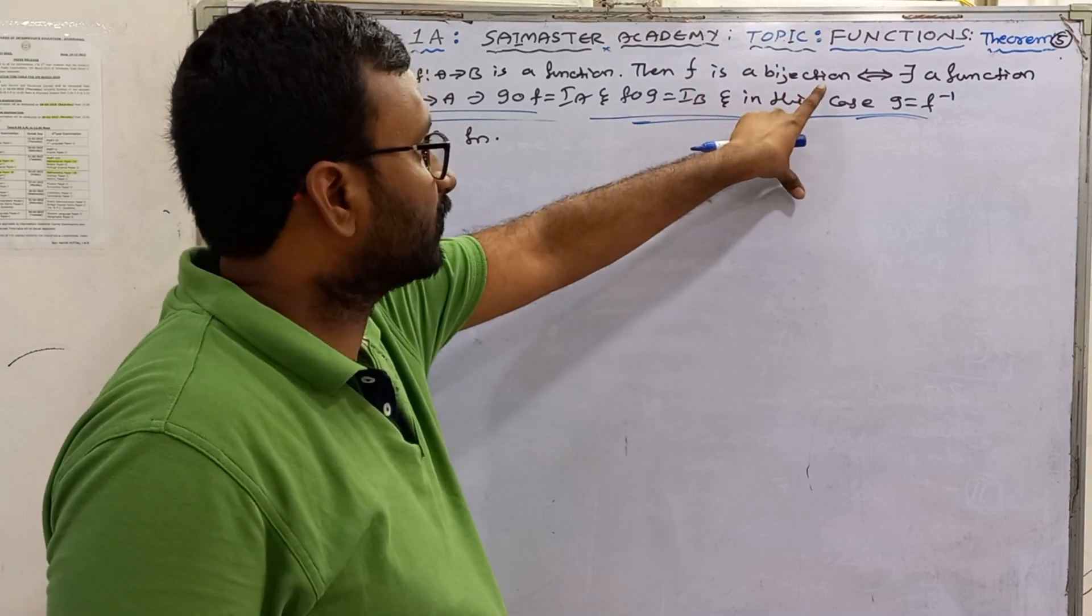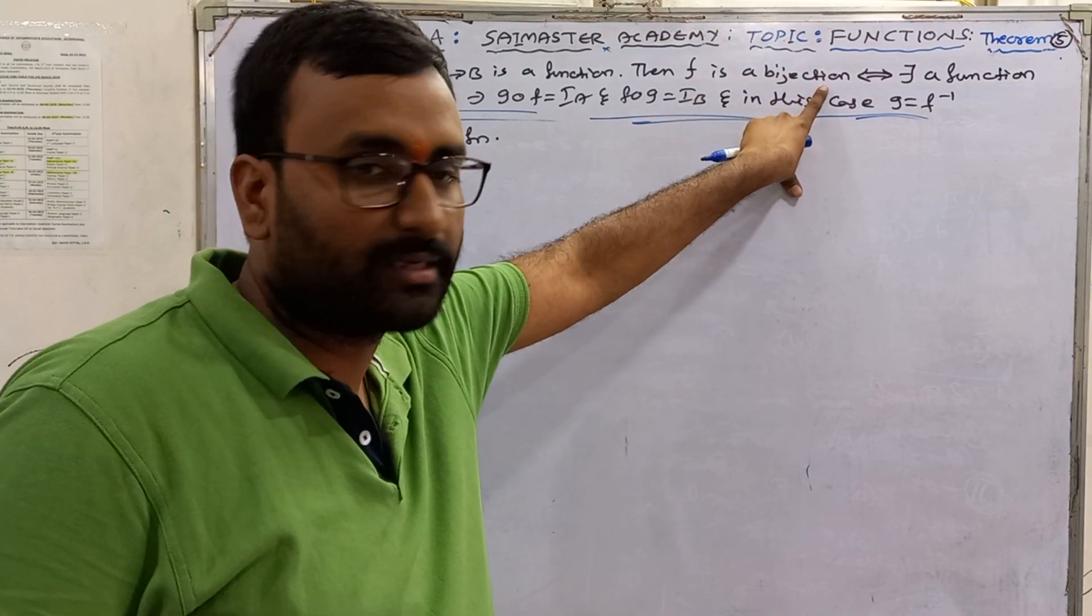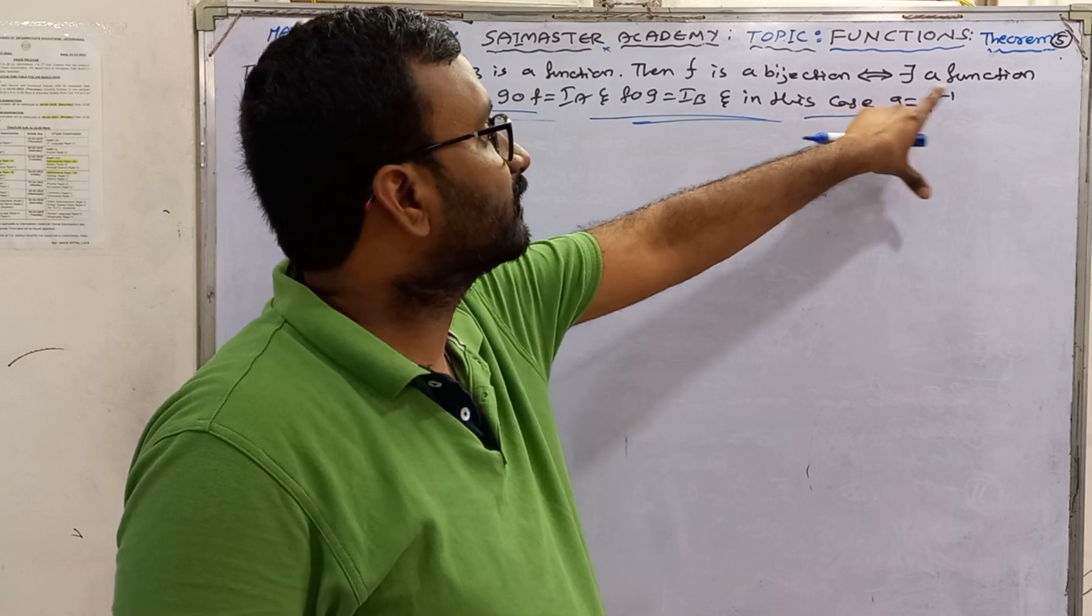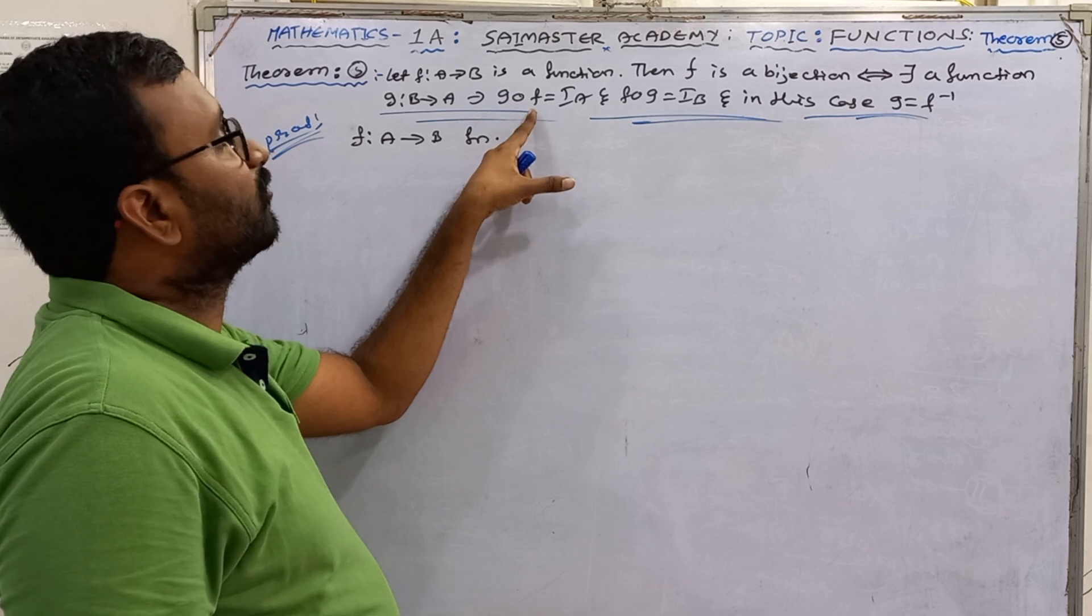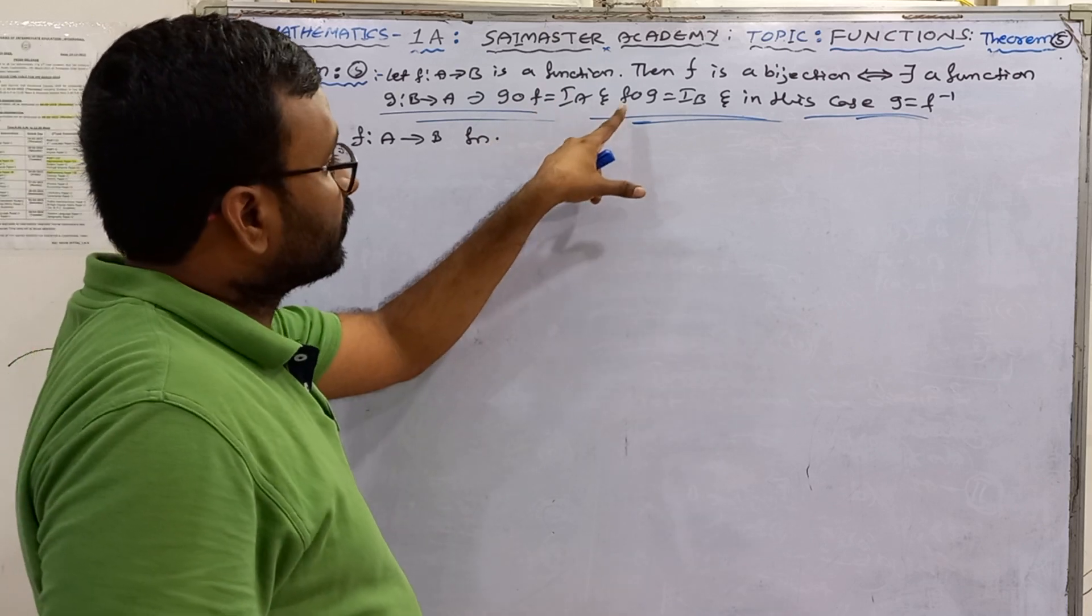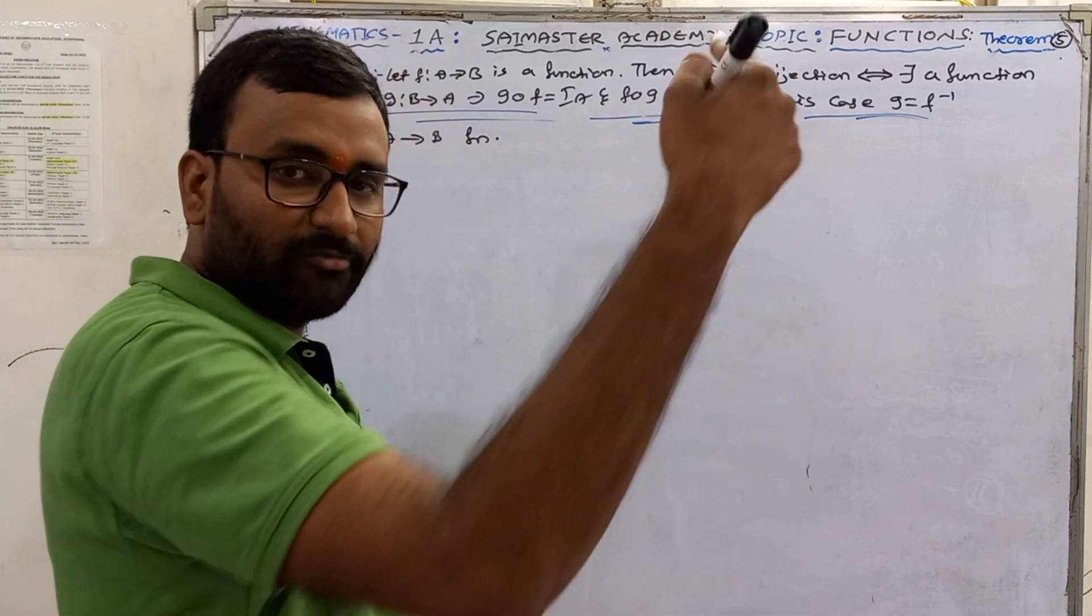F is bijection if and only if there exists a function G from B to A, such that G circle F equal to I_A and F circle G equal to I_B, and F is a bijection.